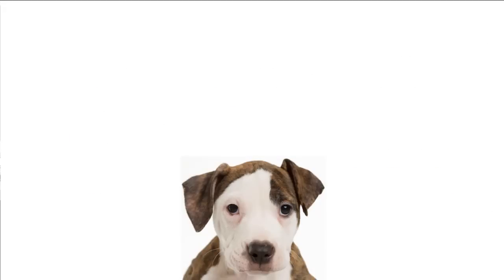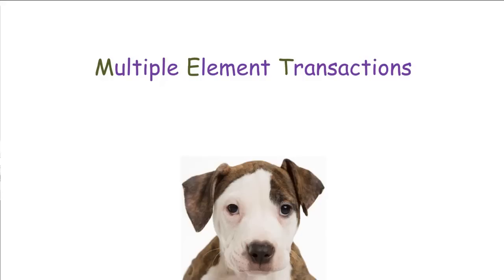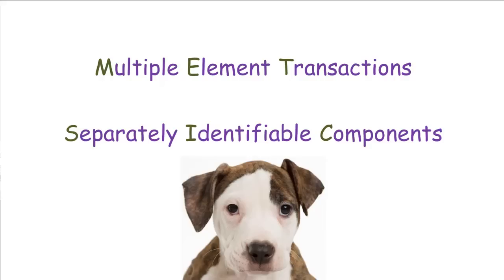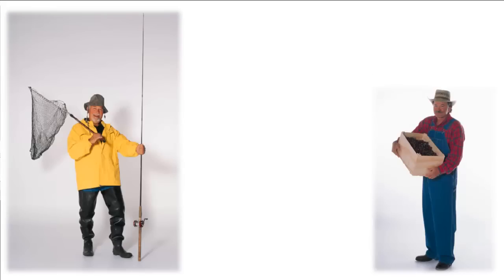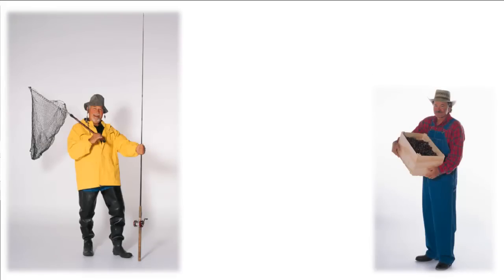To answer our dog system revenue recognition policy decision, we will need to consider multiple element transactions and separately identifiable components. Don't know what these are? Look them up. Another tricky revenue recognition situation is when transactions don't involve money. In this case, not only is identifying the issue often missed by students, but dealing with the measurement aspects can also be complex.